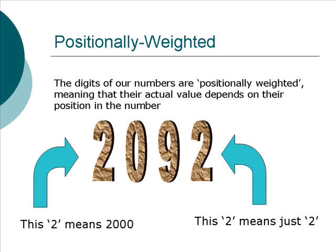Our number system is positionally weighted. That means that the actual value of a digit depends on the position of the digit in the number. Take, for example, the number 2,092. The 2 on the left means 2,000, while the 2 on the right means just 2.